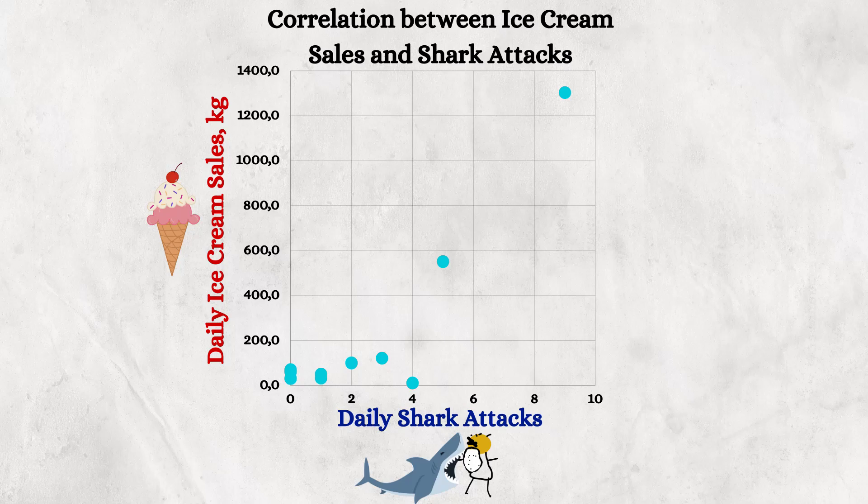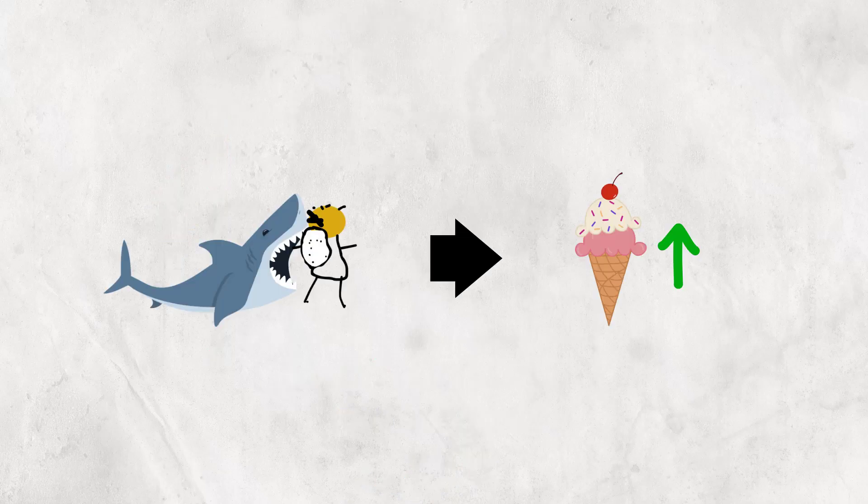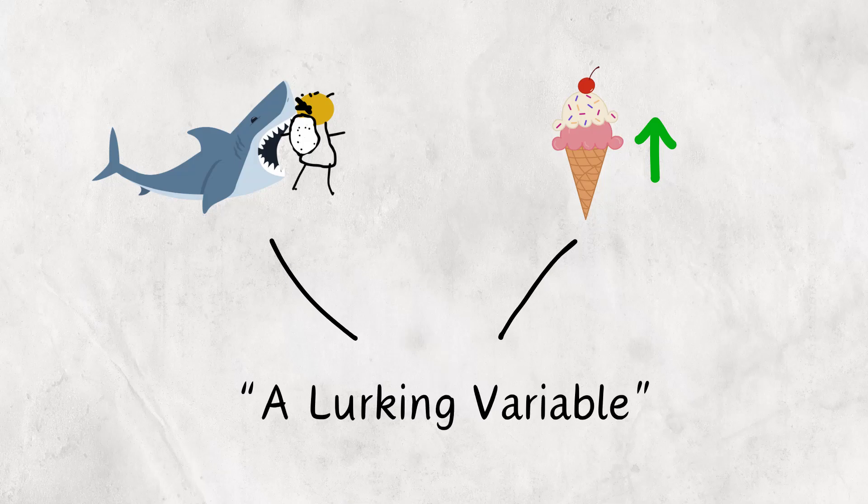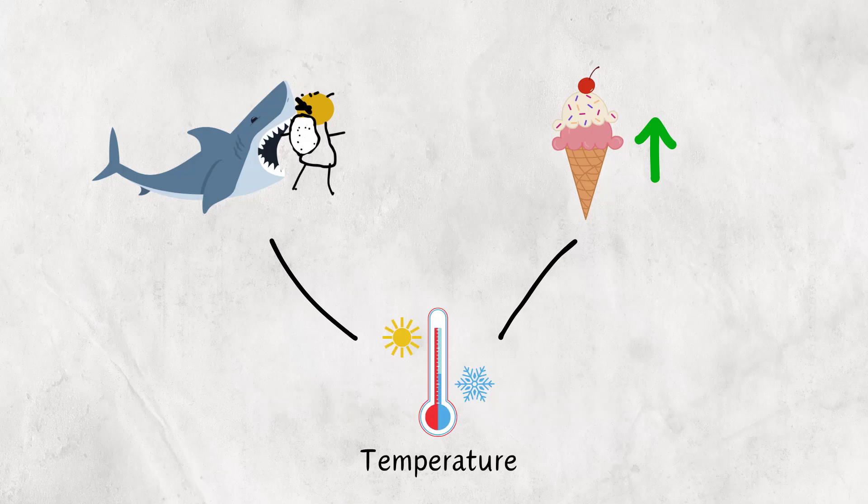Let's take a look at the ice cream example once again. Surely shark attacks cannot cause a surge in ice cream sales for that given day, right? There must be an underlying cause. This is what statisticians call a lurking variable. A factor that correlates with both factors, but isn't included in the data. In this case, it's temperature.